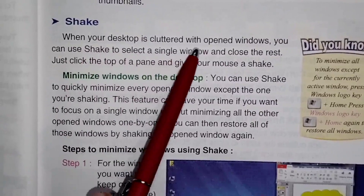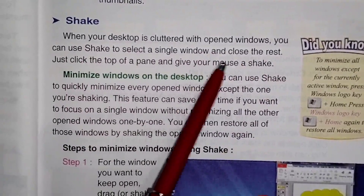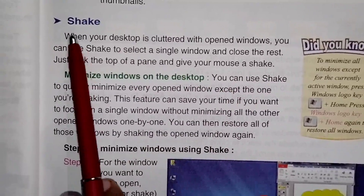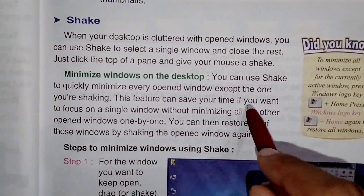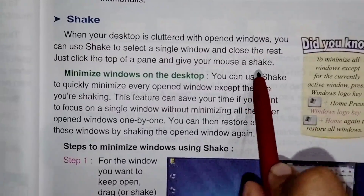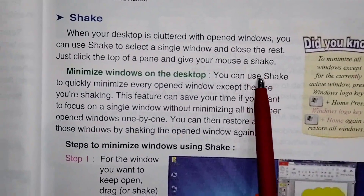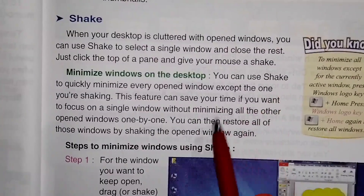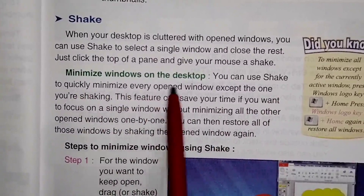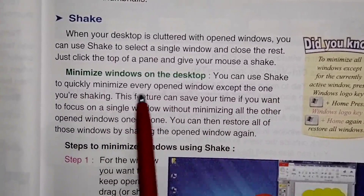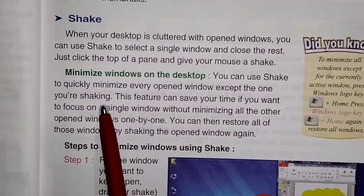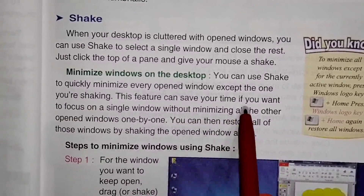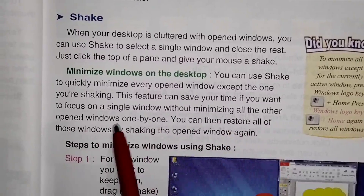When your desktop is cluttered with open windows, you can use Shake to select a single window and close the rest — just click the top of the window and give your mouse a shake. You can use Shake to quickly minimize every open window except the one you are shaking. This feature can save your time if you want to focus on a single window without minimizing all the other open windows one by one.